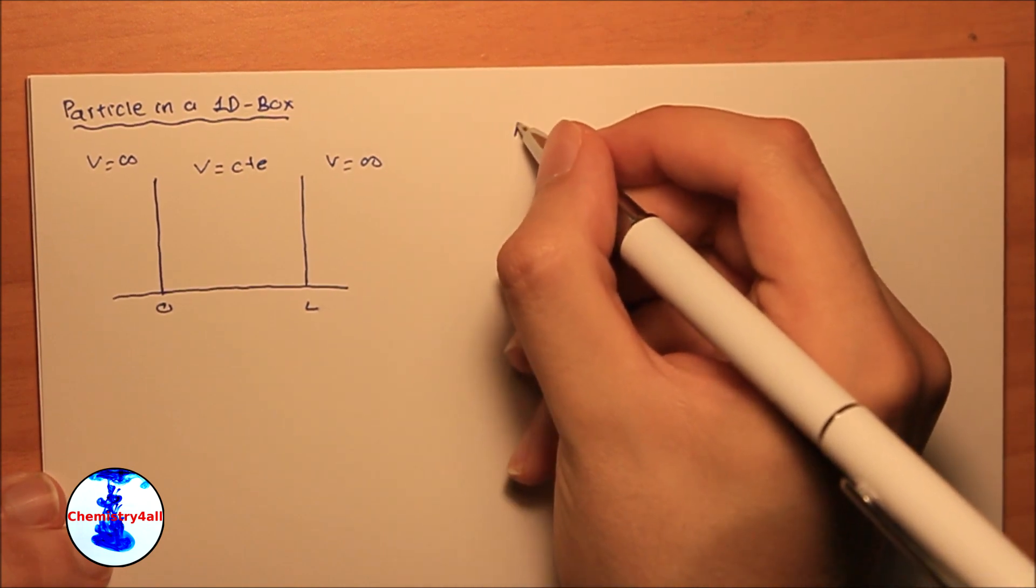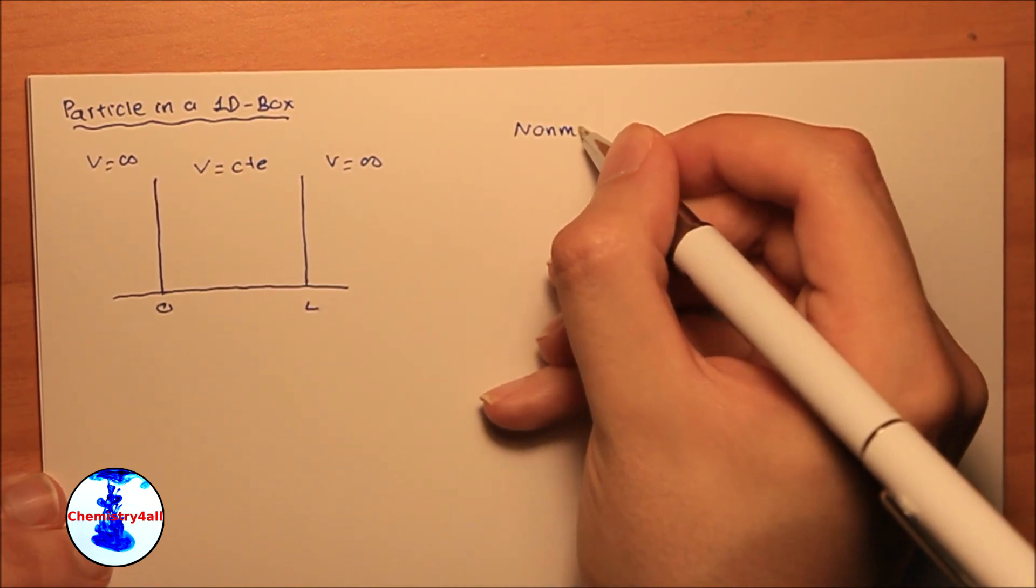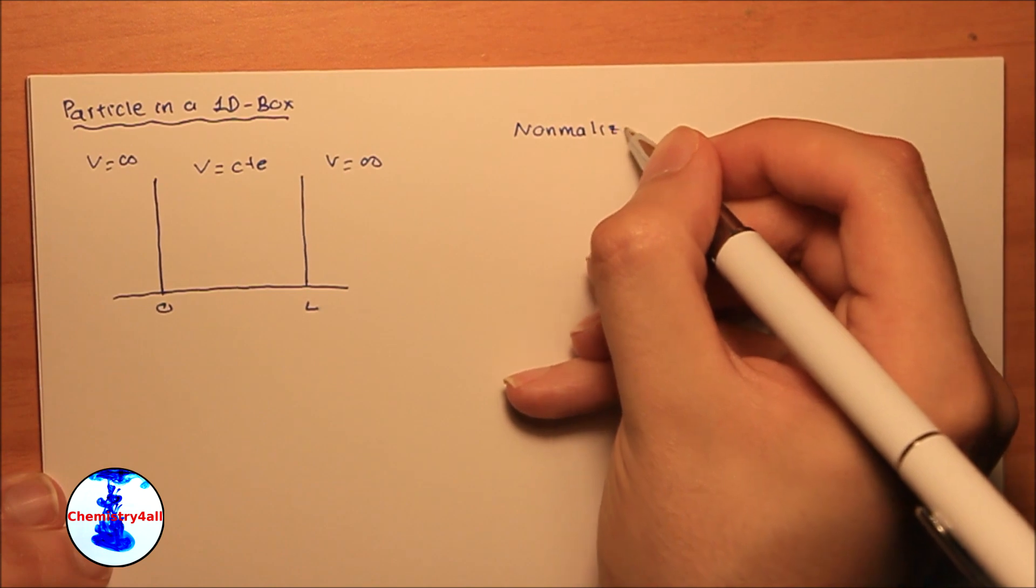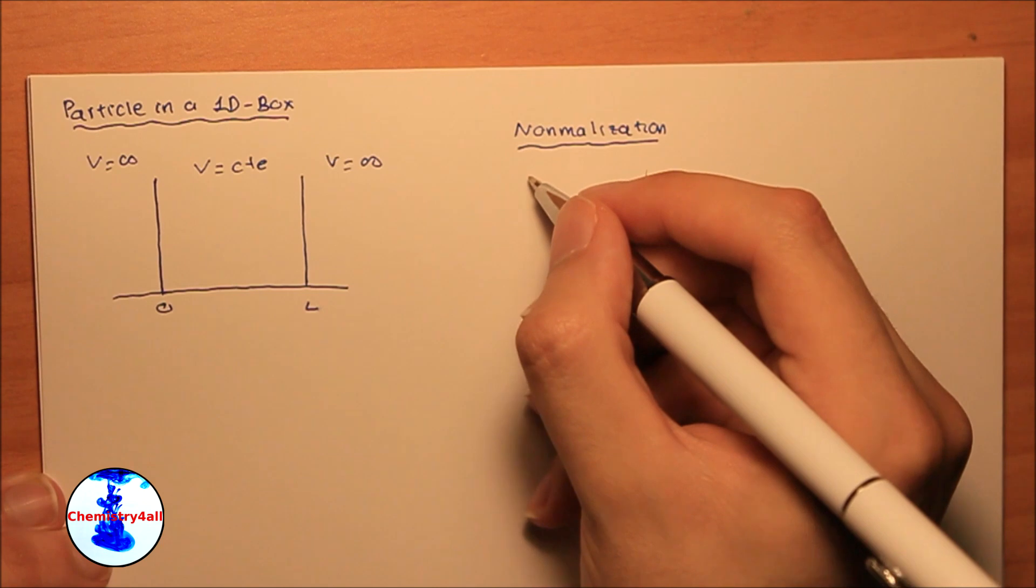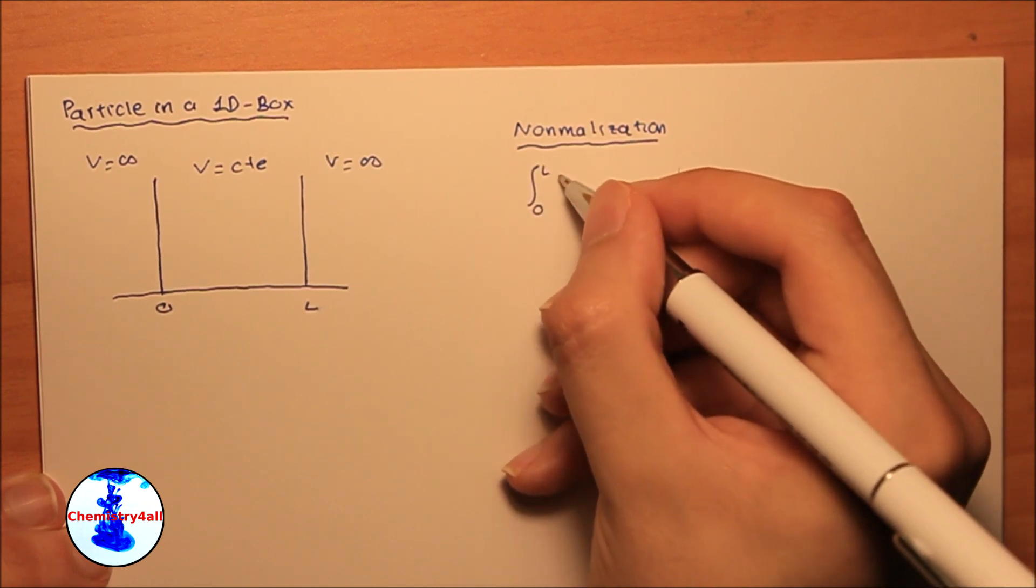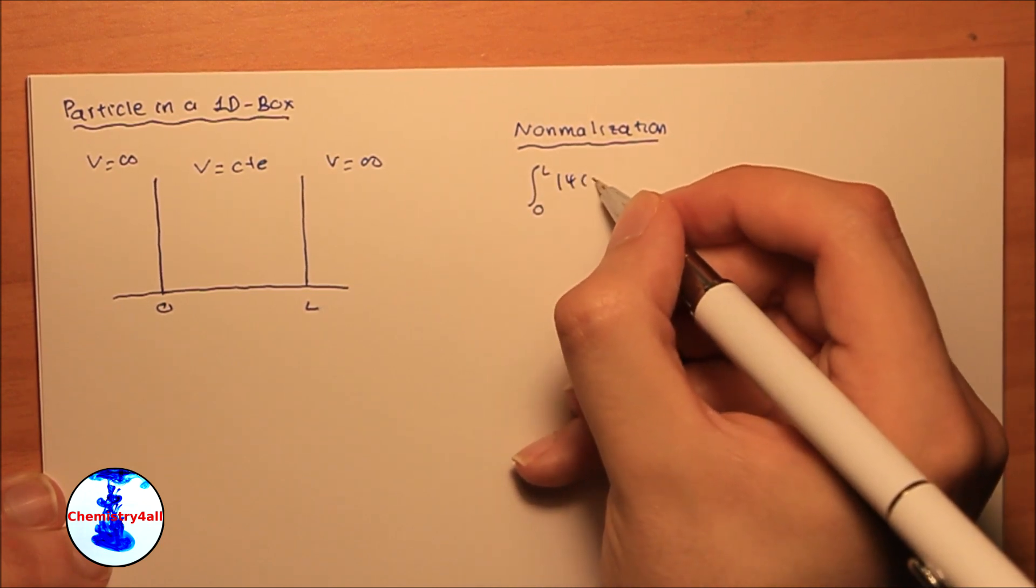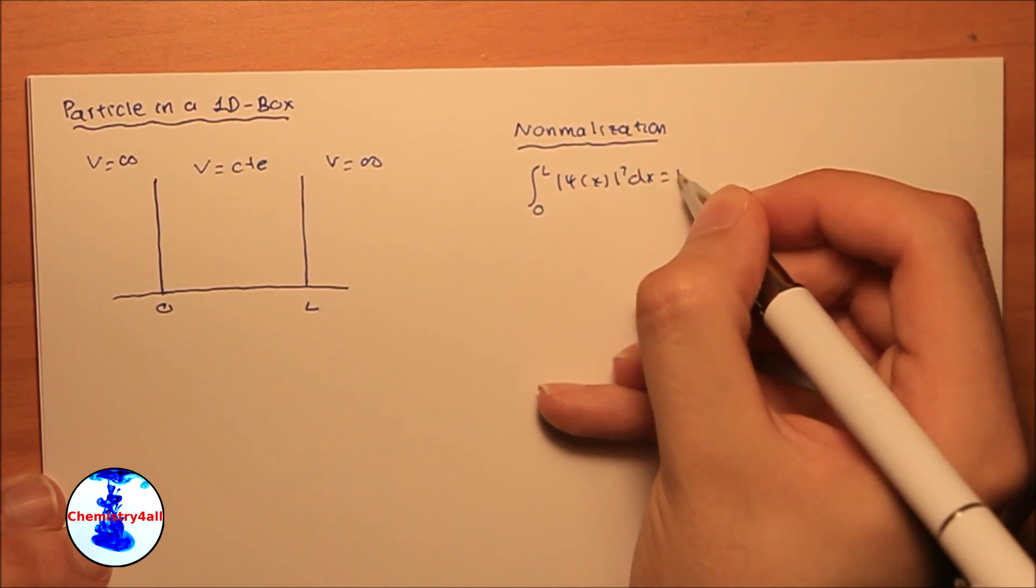Additionally, we will establish two conditions. The first one is the so-called normalization condition. This condition is actually pretty simple. And it states that, essentially, if there is a particle in the box, the probability of finding the particle inside the box has to be 1. That is, the particle is actually in the box.